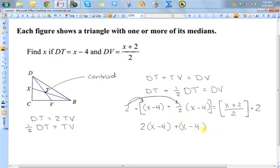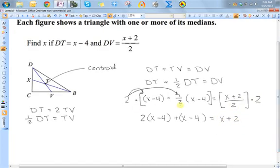And then times this, the 2s cancel out, so it's just x plus 2. The whole reason for doing that was we knew it would cancel out with these 2s in the denominator. So let's distribute this 2, so I get 2x minus 8 plus x minus 4 equals x plus 2.